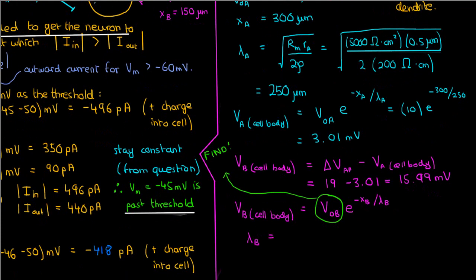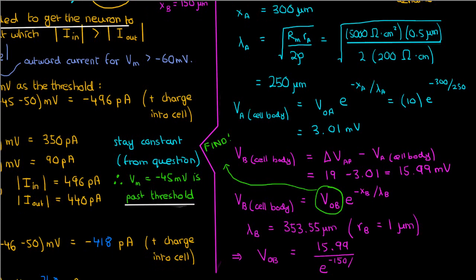To find V₀_B, we first calculate lambda B the same way as lambda A, except the radius is now 1 micron because dendrite B has a 2-micron diameter. This gives a length constant lambda B of 353.55 microns. Plugging everything into the voltage length equation for synapse B yields V₀_B equals 24.44 millivolts. So the minimum EPSP required at synapse B to fire an action potential is 24.44 millivolts.